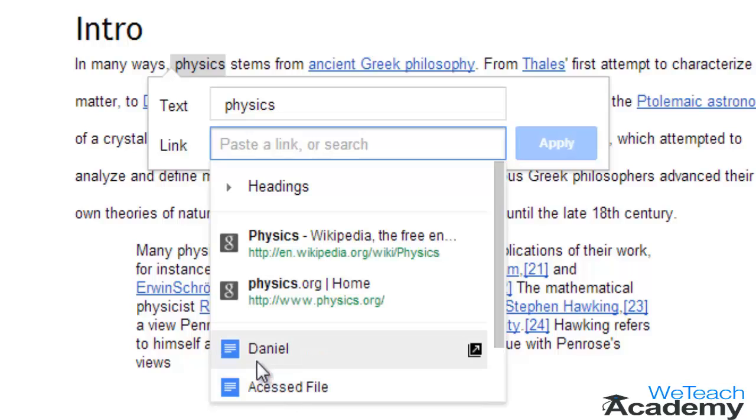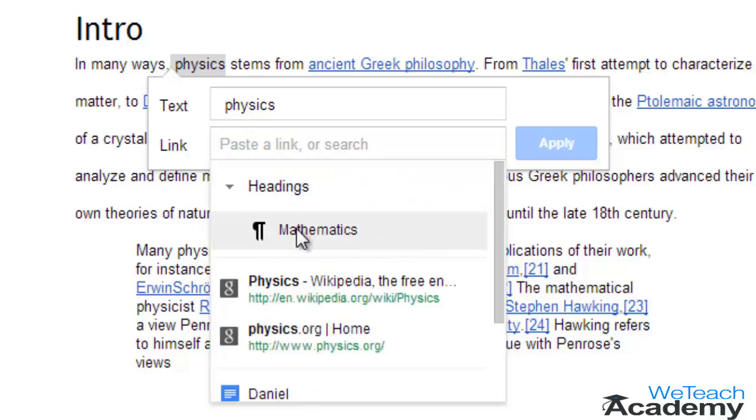You can select documents in your drive, choose the top Google search for your text, choose from existing headings within your document, or search for something else or type in your own URL.